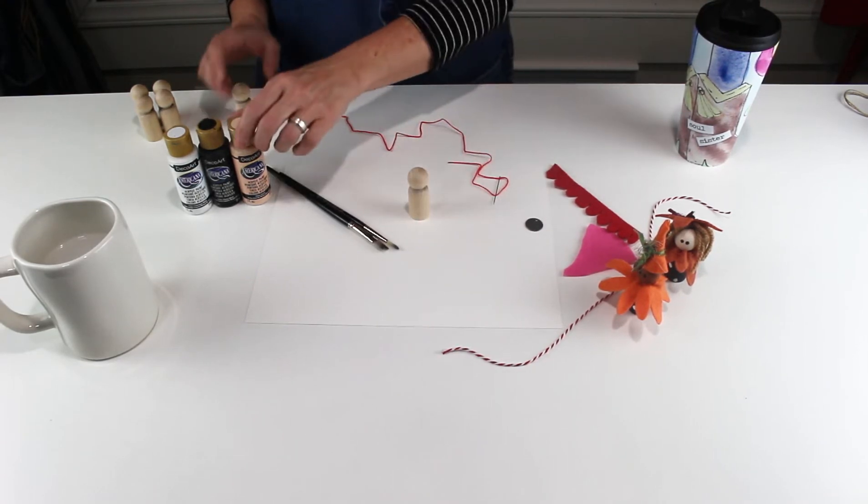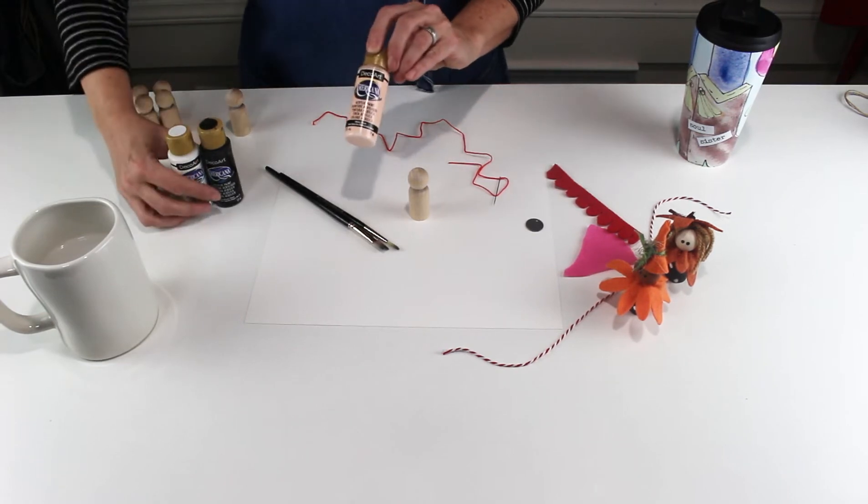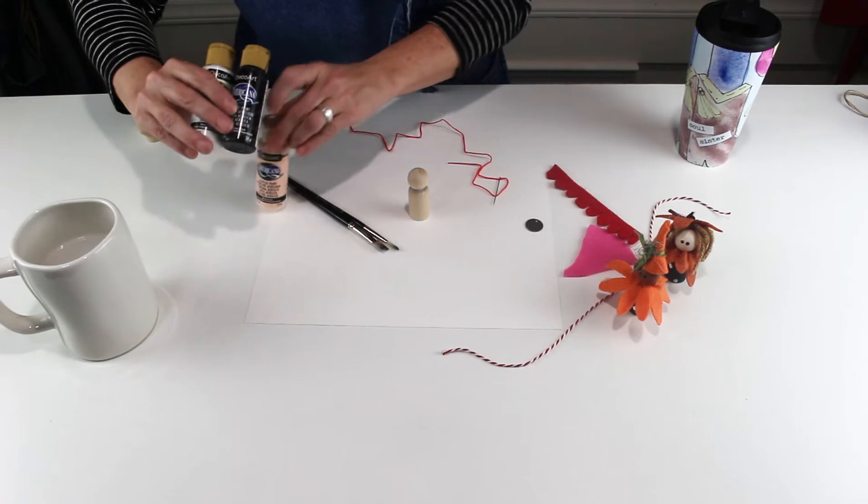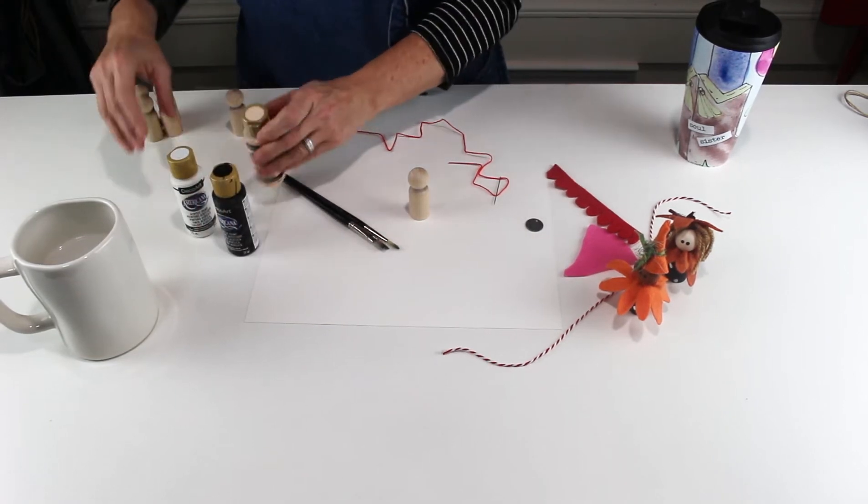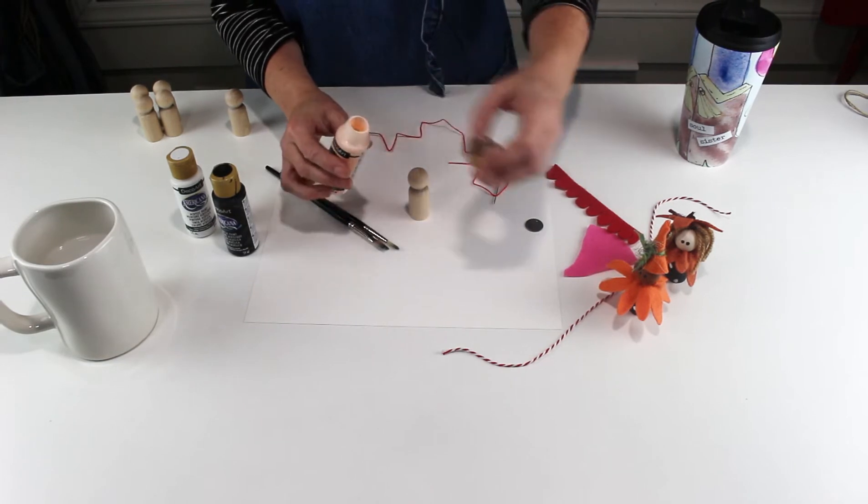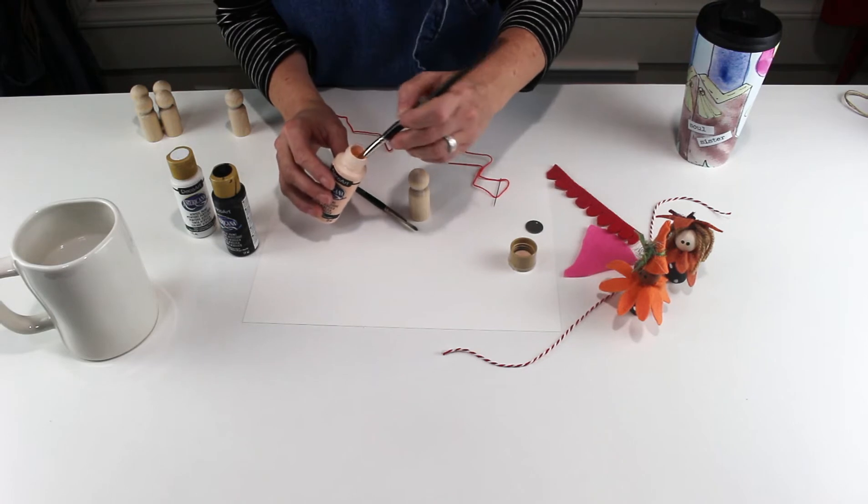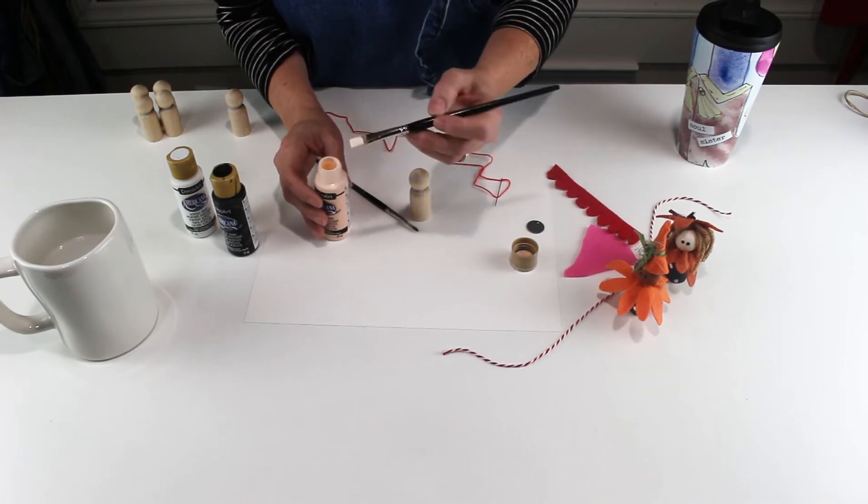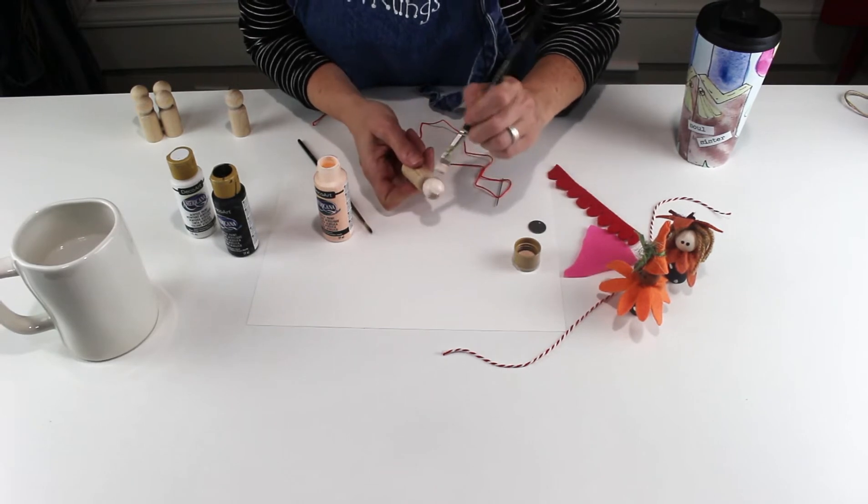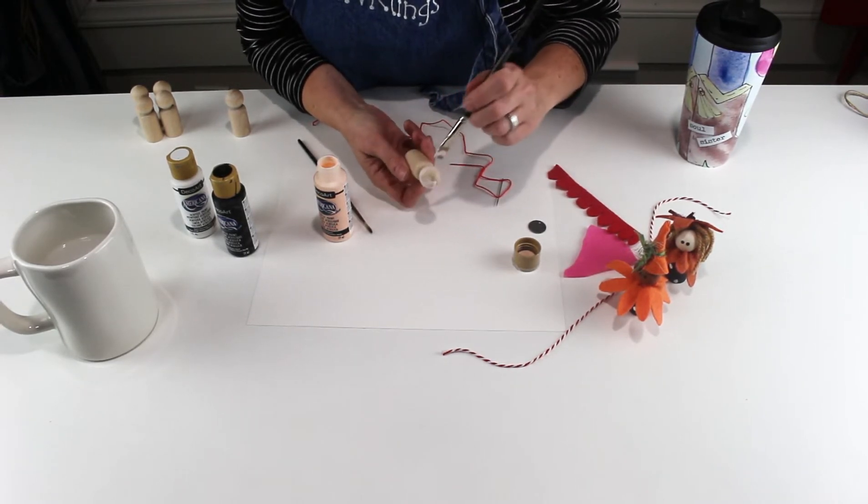The first step is to paint them. So I went ahead and got my paint ready. I've got some DecoArt paint in a color that's great for flesh or skin color, and black and white. I'm not painting a lot, so I'm just going to shake the paint up, open it up, and grab my paint right from inside the jar. I know a lot of times you should pour it on a palette or something, but I don't need a lot. I'm going to paint the head here in a flesh color.